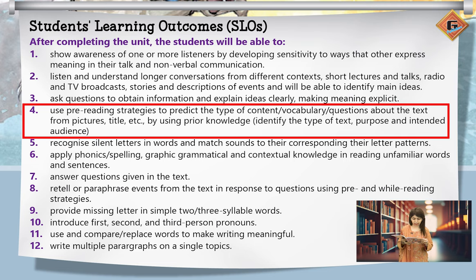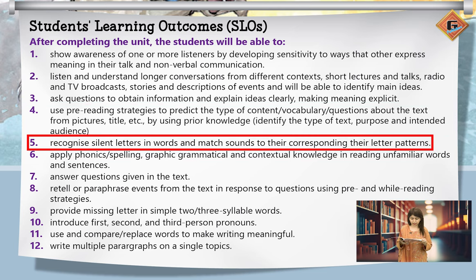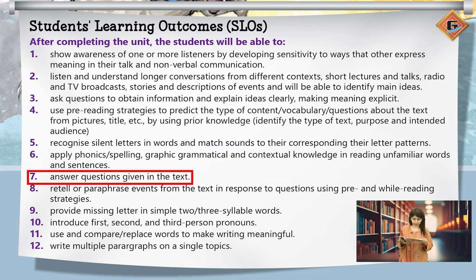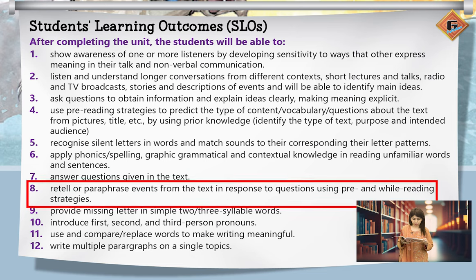Identify the type of text, purpose, and intended audience. Recognize silent letters in words and match sounds to their corresponding letter patterns. Apply phonics, spelling, graphic, grammatical, and contextual knowledge in reading unfamiliar words and sentences. Answer questions given in a text, and retell or paraphrase events from the text in response to questions using pre- and while-reading strategies.